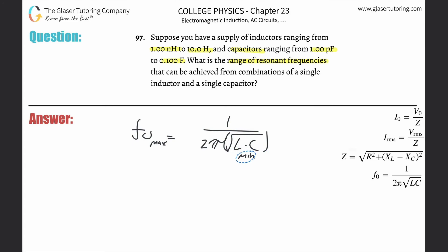So fo_max: one over two pi, take the lowest inductance, and that's the 1 nanohenry, so 1×10^-9 because we need it in henries. Then take the lowest farad, so that's 1×10^-12.